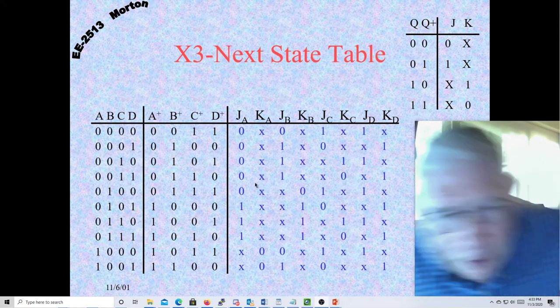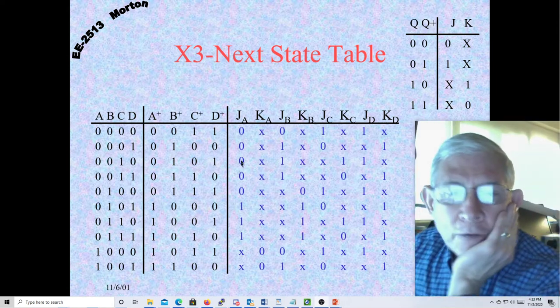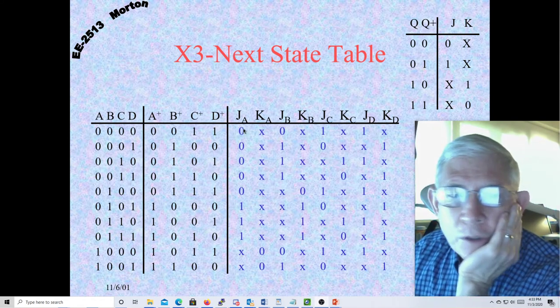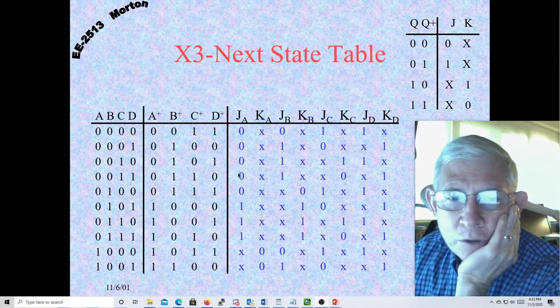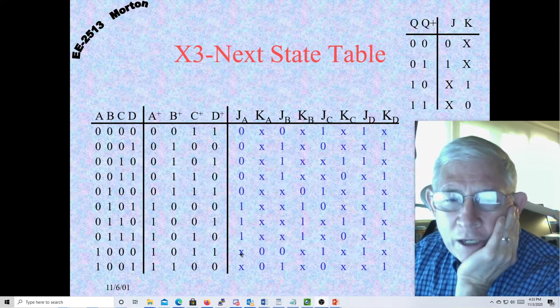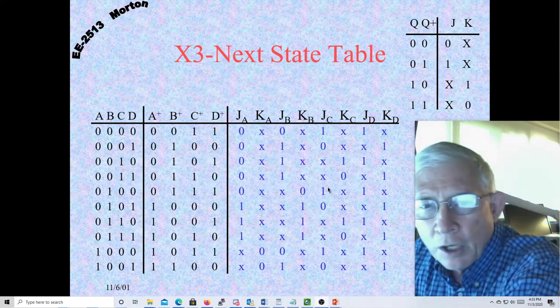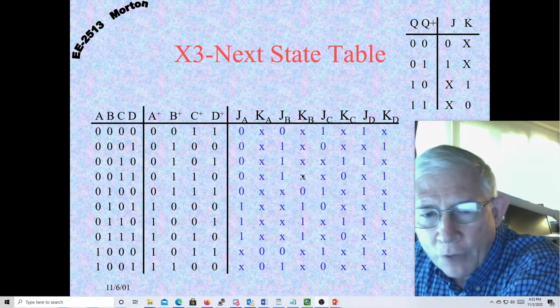So our first one is going to be, we're going to have 0, 0, 0, 0 in the first column, 0, 1, 1, 1 in the next, and then don't cares for all the rest of it. So same thing for all these. Let's look.